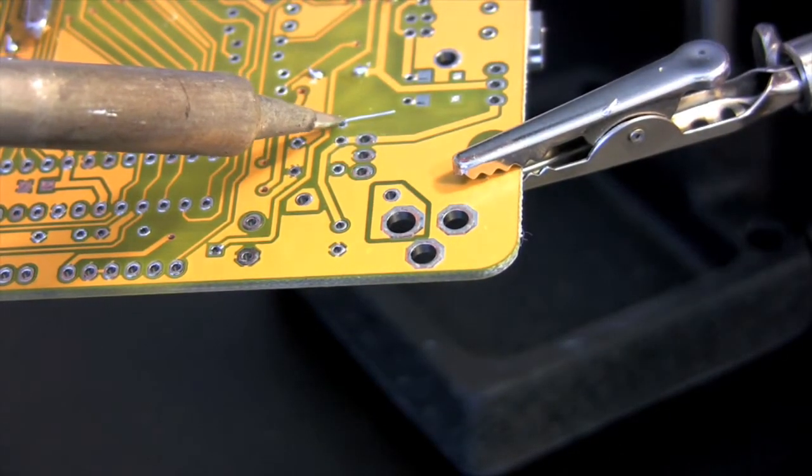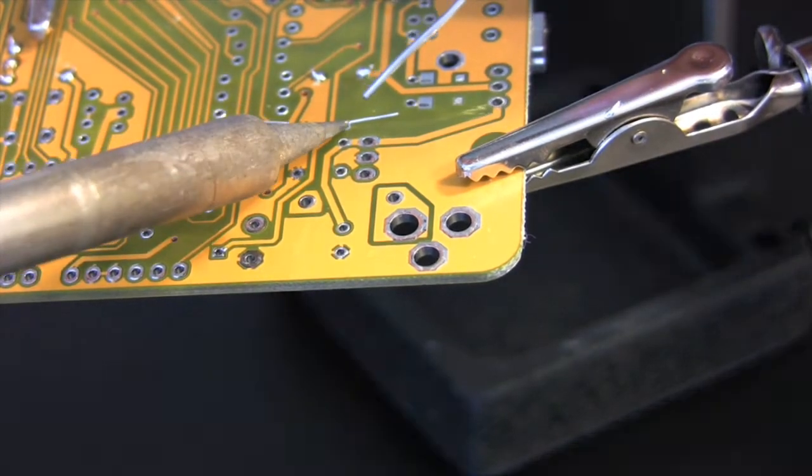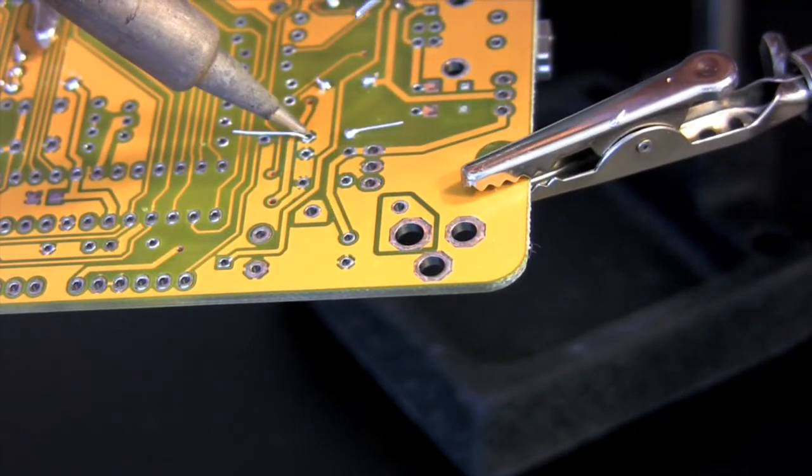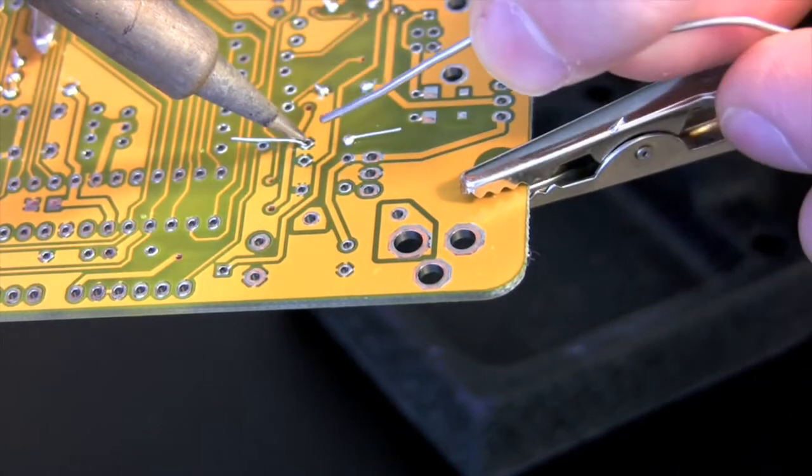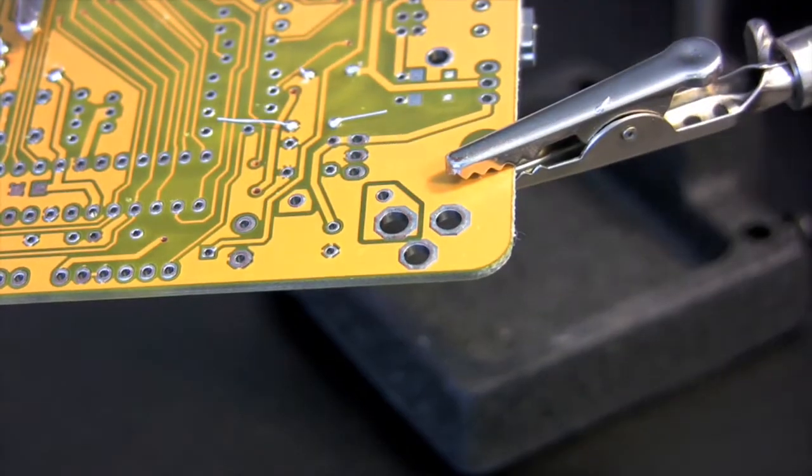This capacitor, like the others, needs to have a Z-Bend placed in its legs before soldering. Be very careful, they're very small and very fragile. As always, heat both the component's leg and the pad, and apply solder to create a good electrical connection.